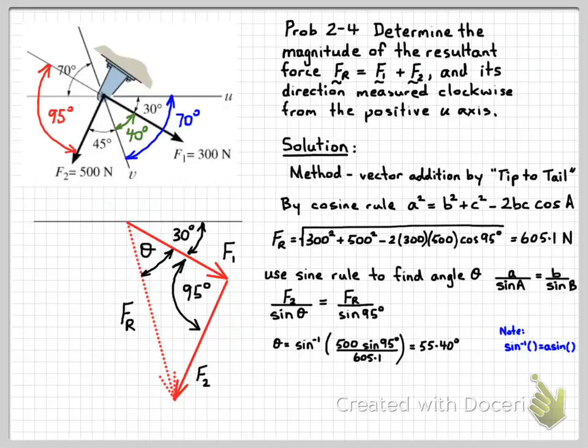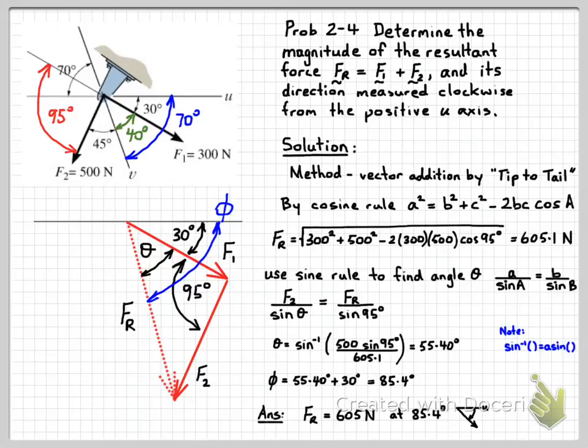That's not the end of the problem though, because of course we want to know this whole angle in here, which will be theta plus 30 degrees. So we call that phi. We have phi equals 55.4 plus 30 degrees equals 85.4 degrees. So now we have everything calculated, we can write our final answers at the bottom. Our resultant force FR is 605 newtons, and it acts at 85.4 degrees clockwise from the u-axis.